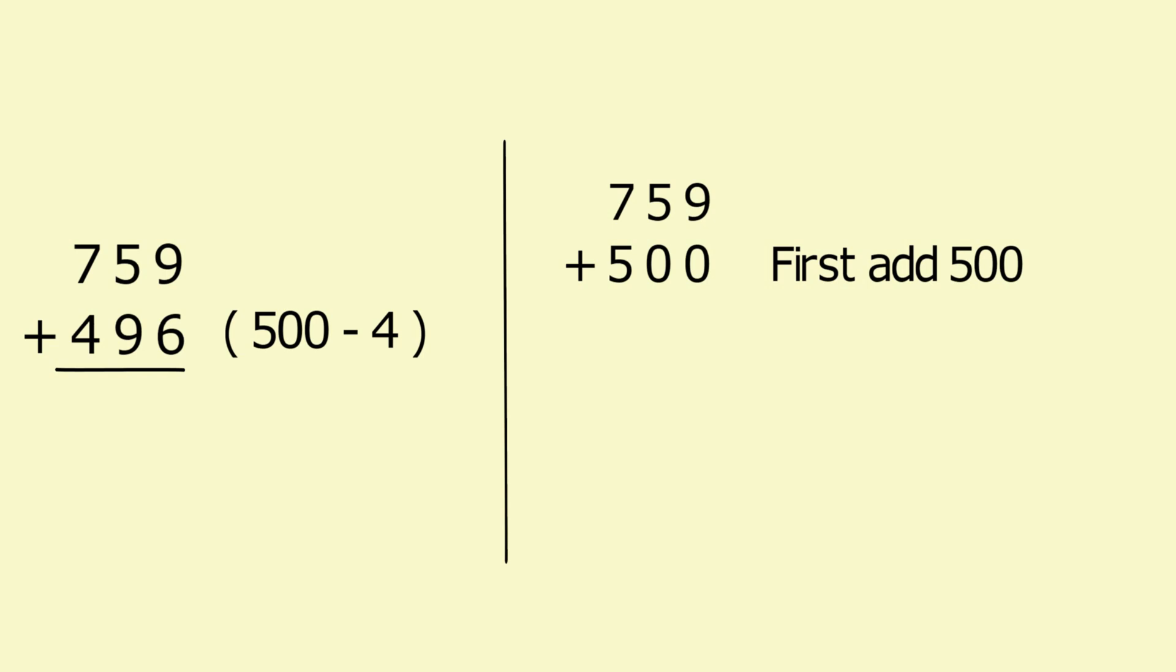759 plus 496. We can also write 496 as 500 minus 4. We can write 759 plus 500 which gives us 1259. Now we are just left with 4, which is very easy to subtract from 1259, which also gives us the same answer, that is 1255.